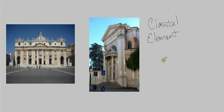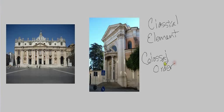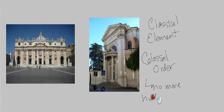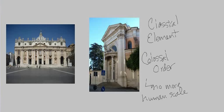Another thing that becomes a real hallmark of Baroque architecture is the colossal order. The colossal order is a casting away of that human scale — no more human scale. You can see this in these buildings with columns going from ground level all the way up to the ceiling level. This is large-scale, awesome, impressive, and imposing.